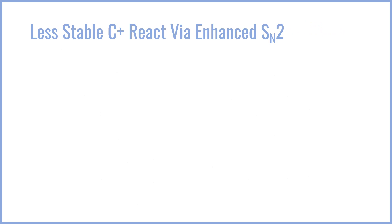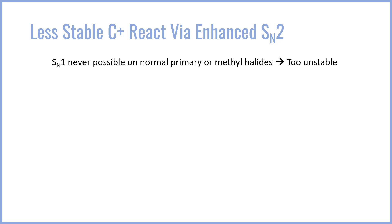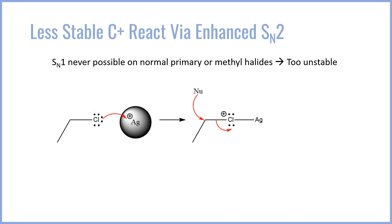What happens when you have a less stable cation? In the previous example we looked at a dibenzyl bromide, which is extremely stable as a cation. However, what if you have something like a primary or methyl species? SN1 is never possible on a normal non-resonance-stabilized primary or methyl halide — they're just too unstable. So what happens is that when the chlorine or other halide bonds to the silver, it stays in this intermediate state and doesn't auto-ionize. Instead, it hangs out as this cationic halide species and waits for the nucleophile to come attack. This enhances the rate of the process because this is an activated leaving group — you get the same product, but it's occurring faster than a normal SN2 because the AgCl is activating the leaving group for substitution without forming the cation.